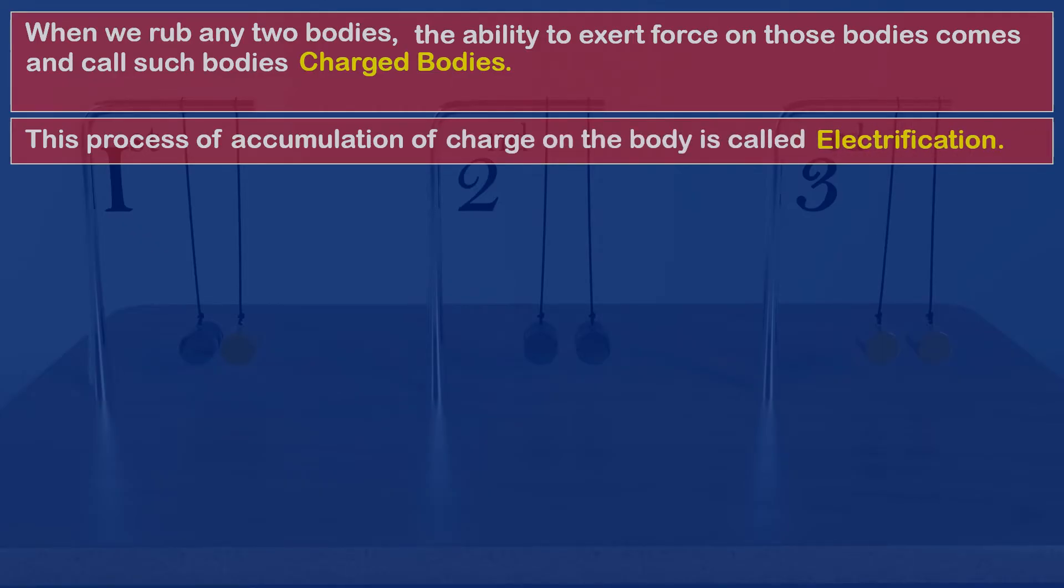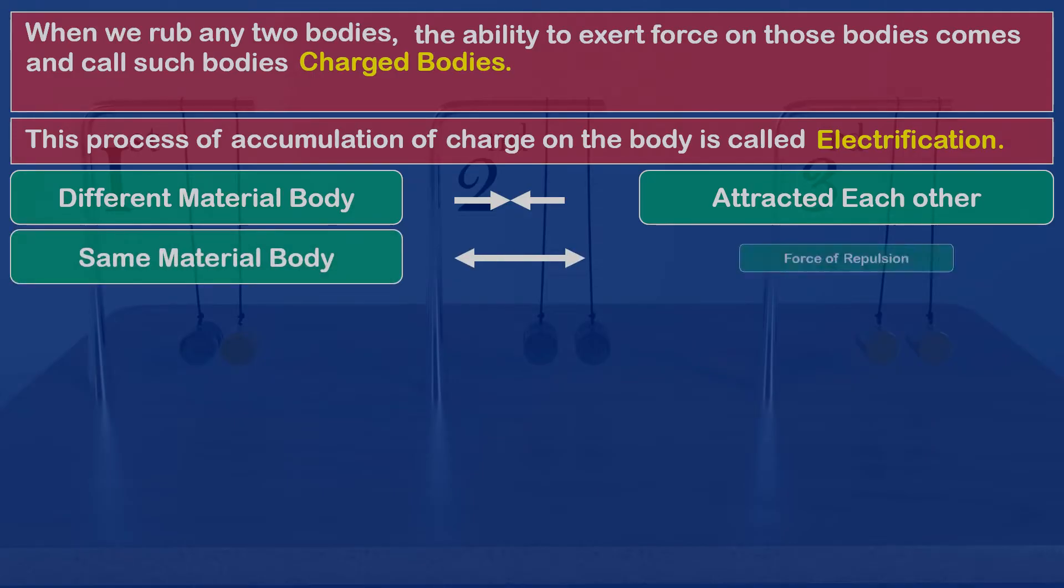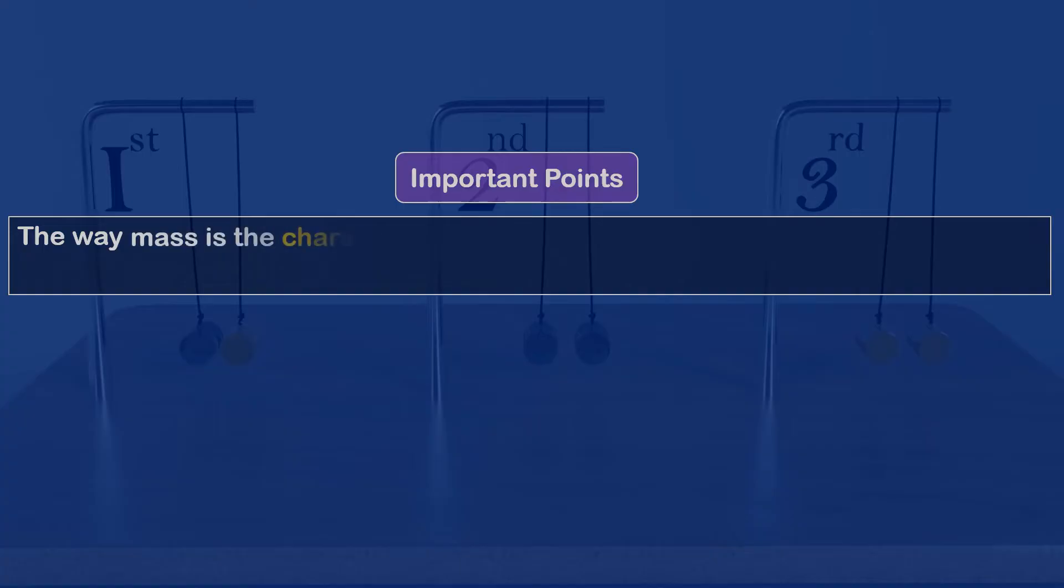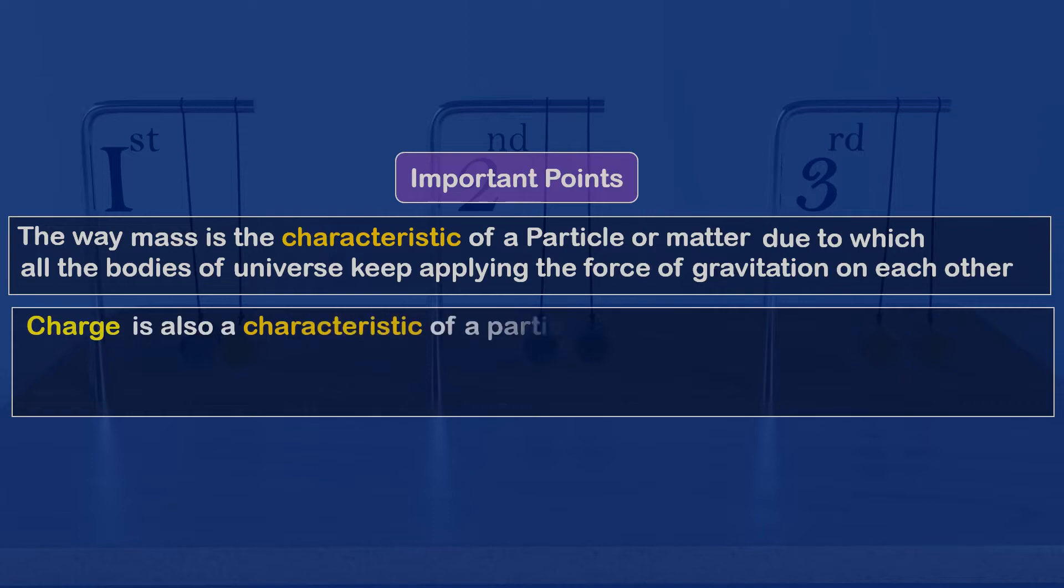And the second thing which was seen in this experiment is that after rubbing with silk cloth, different material bodies attracted each other. At the same time, the body of the same material was exerting a force of repulsion on each other. Scientists were beginning to understand that, the way mass is characteristic of a particle or matter, due to which all the bodies of the universe keep applying the force of gravitation on each other, similarly, the charge is also characteristic of a particle or matter, due to which a particle or matter exerts a force on another matter.